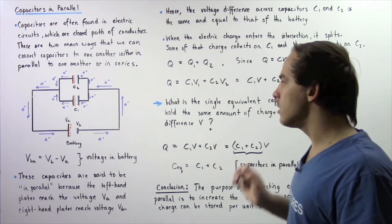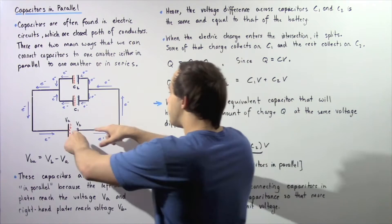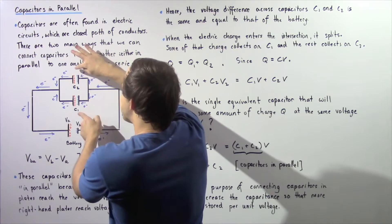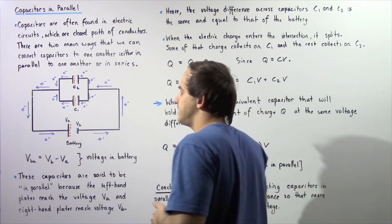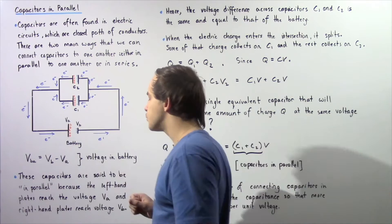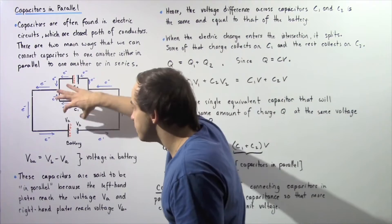In this lecture we're going to discuss capacitors connected in parallel. If we take two capacitors and place them in parallel, that will look something like this. We have our two capacitors connected in parallel, where the capacitance of the first is given by C1 and the capacitance of the second is given by C2. When we take a battery and place it within our electric circuit, we're essentially creating an electric potential difference and a voltage difference.